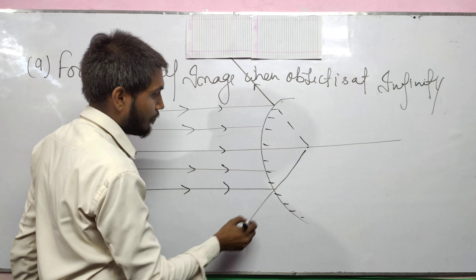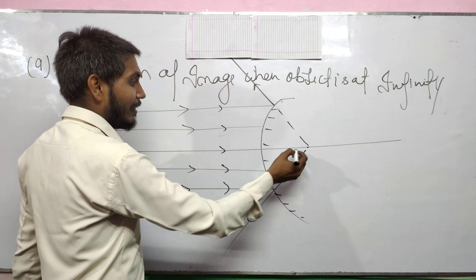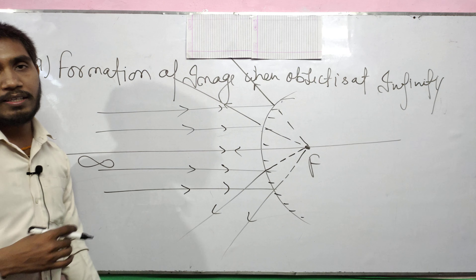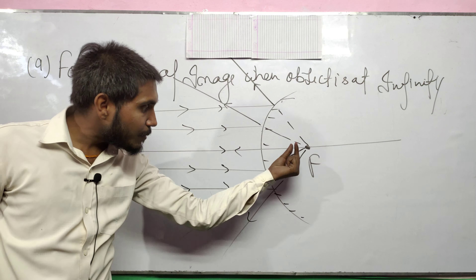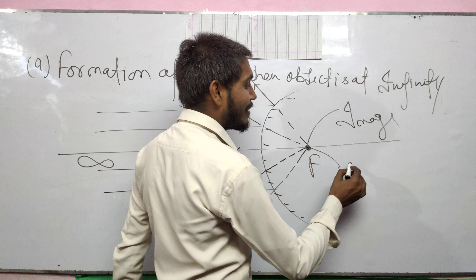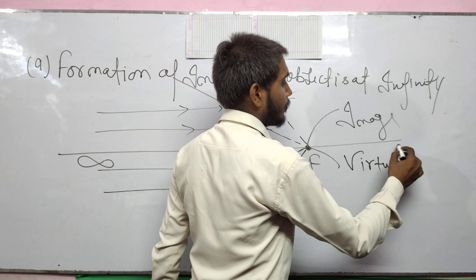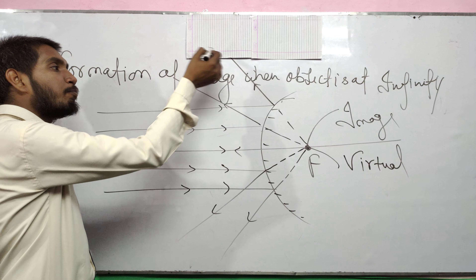After reflection from the convex mirror, these rays are reflected as a divergent beam, and appear to be coming from the focus point F — that is, the principal focus.